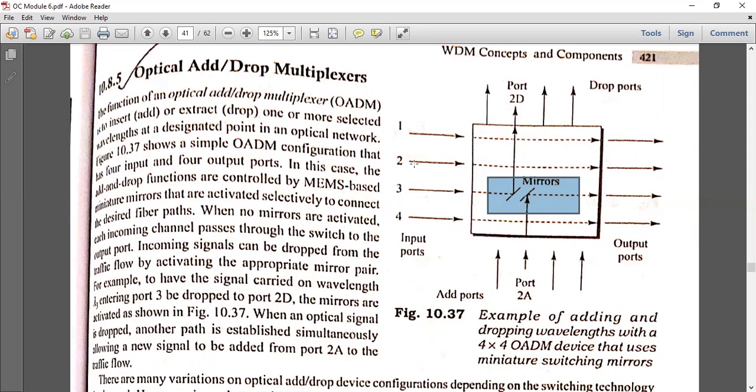When the optical signal is dropped, another path is established simultaneously allowing a new signal. When the path drops to the 2D port, at the same time a new path is created at the add port.